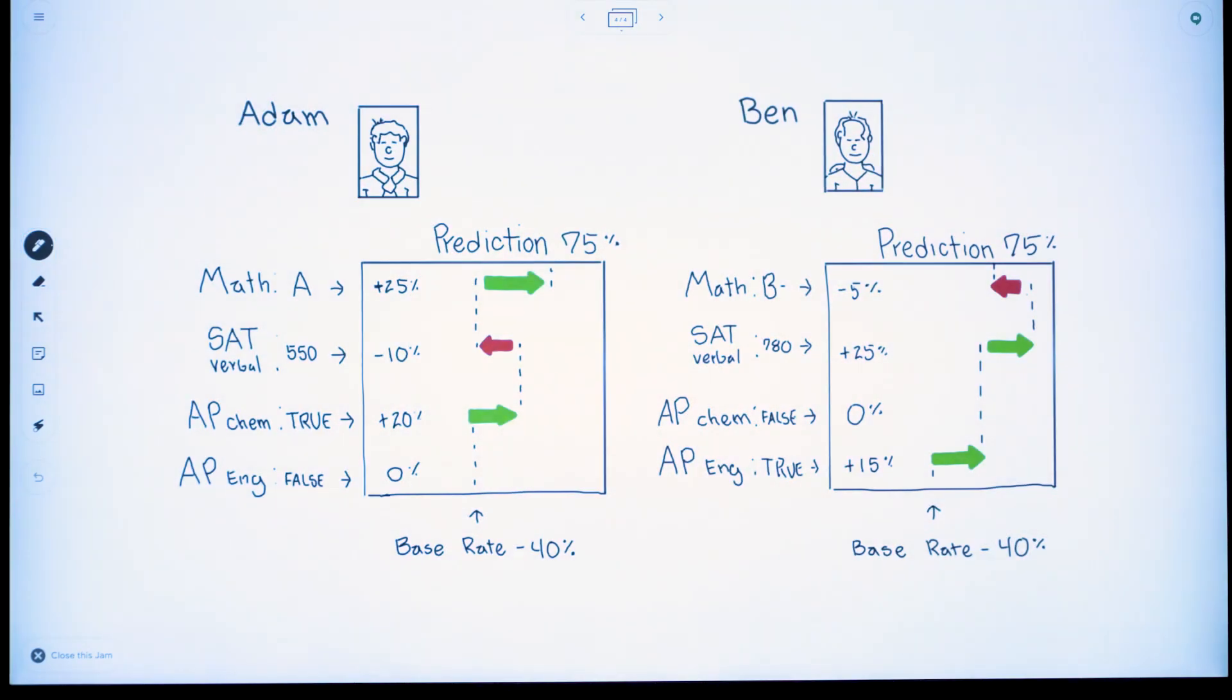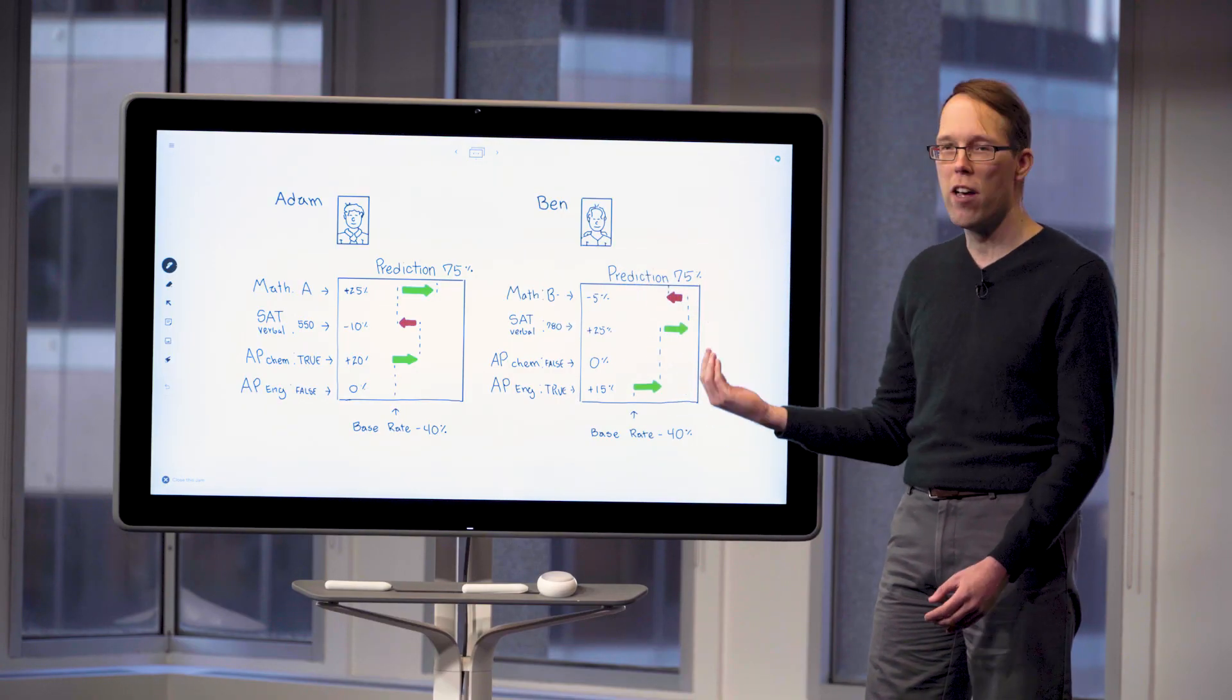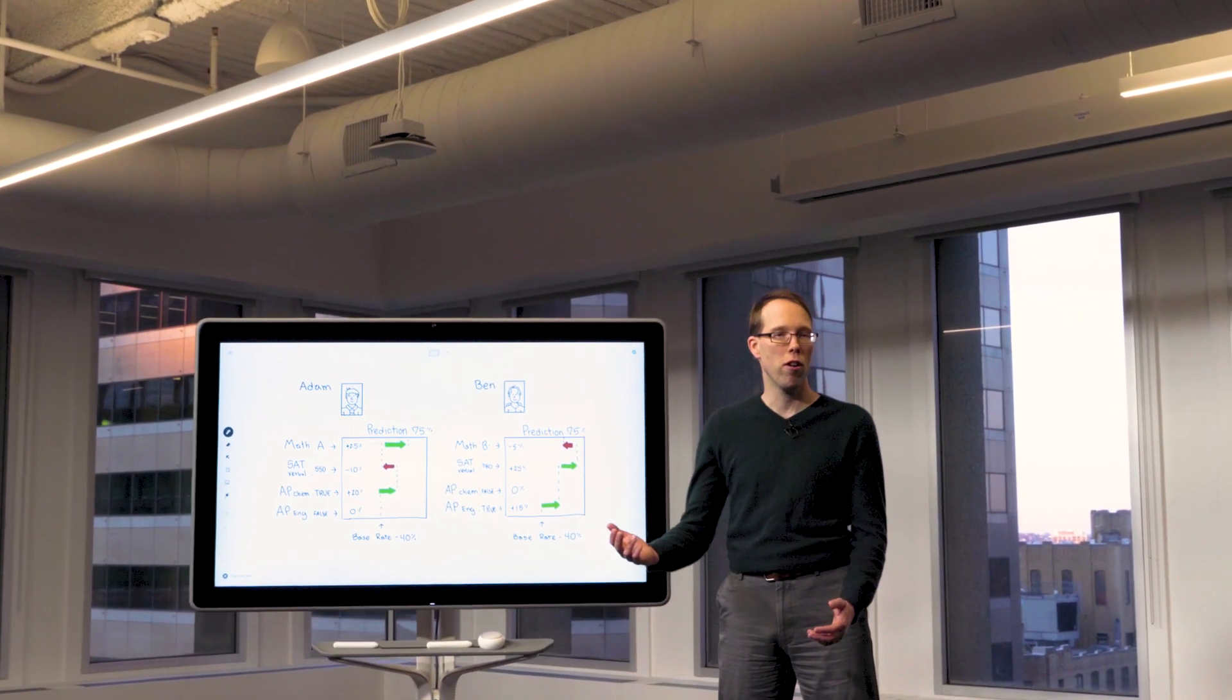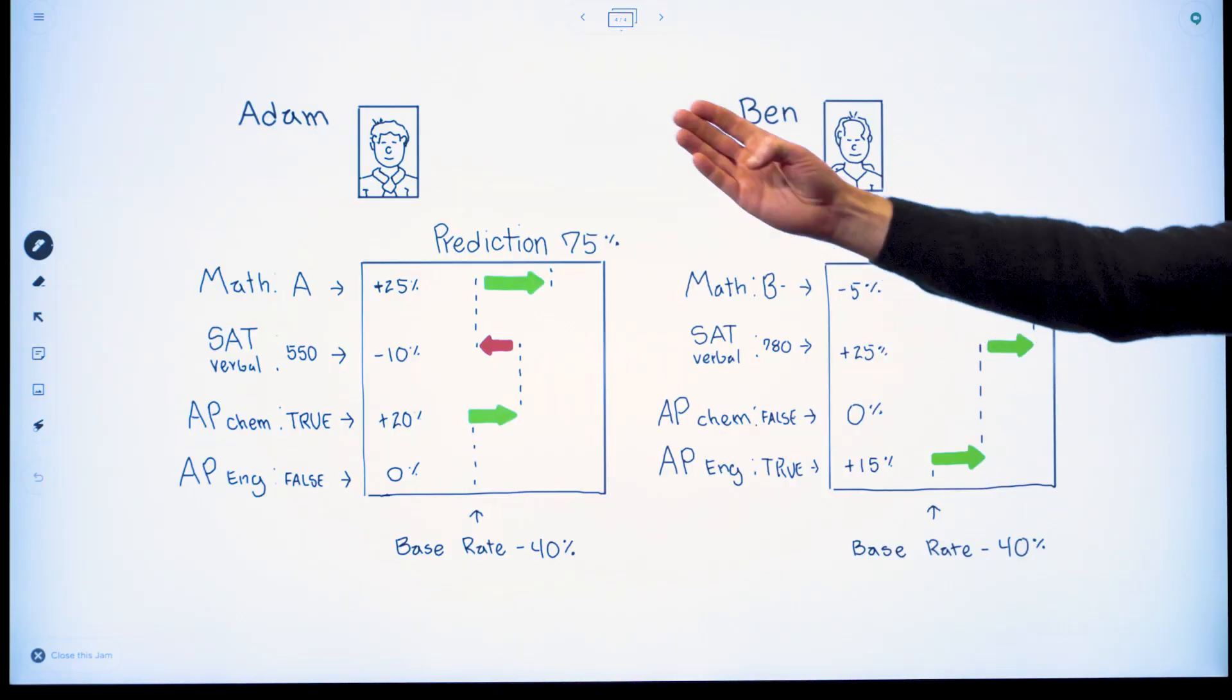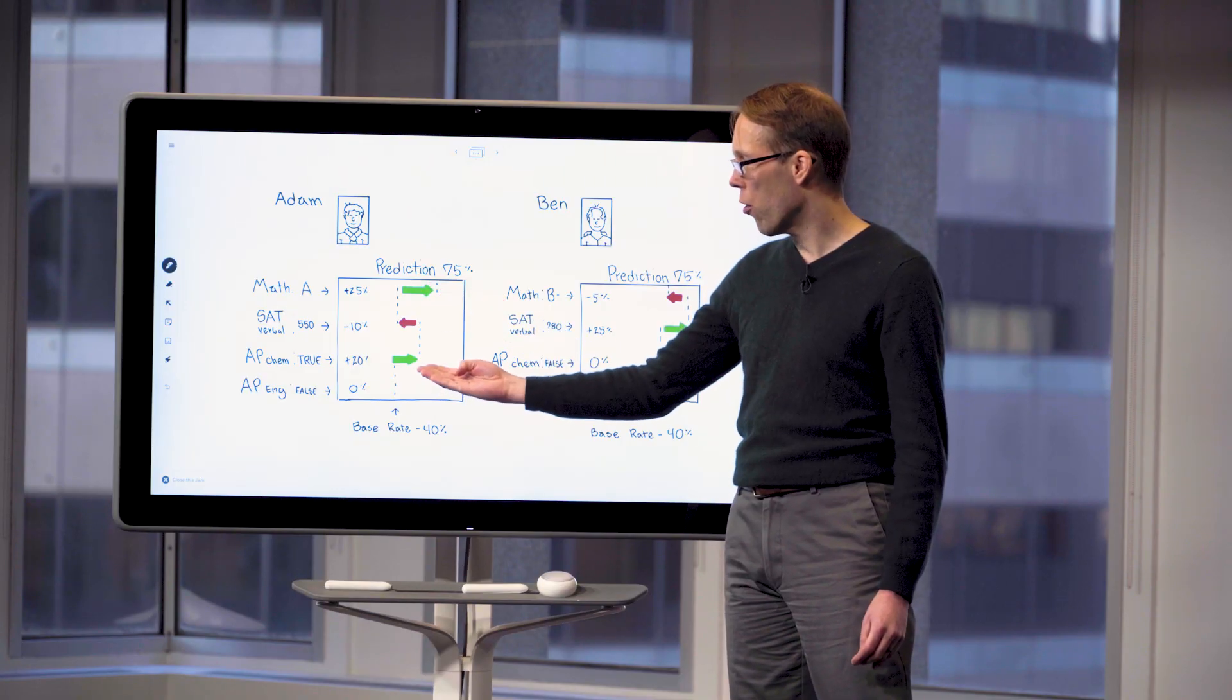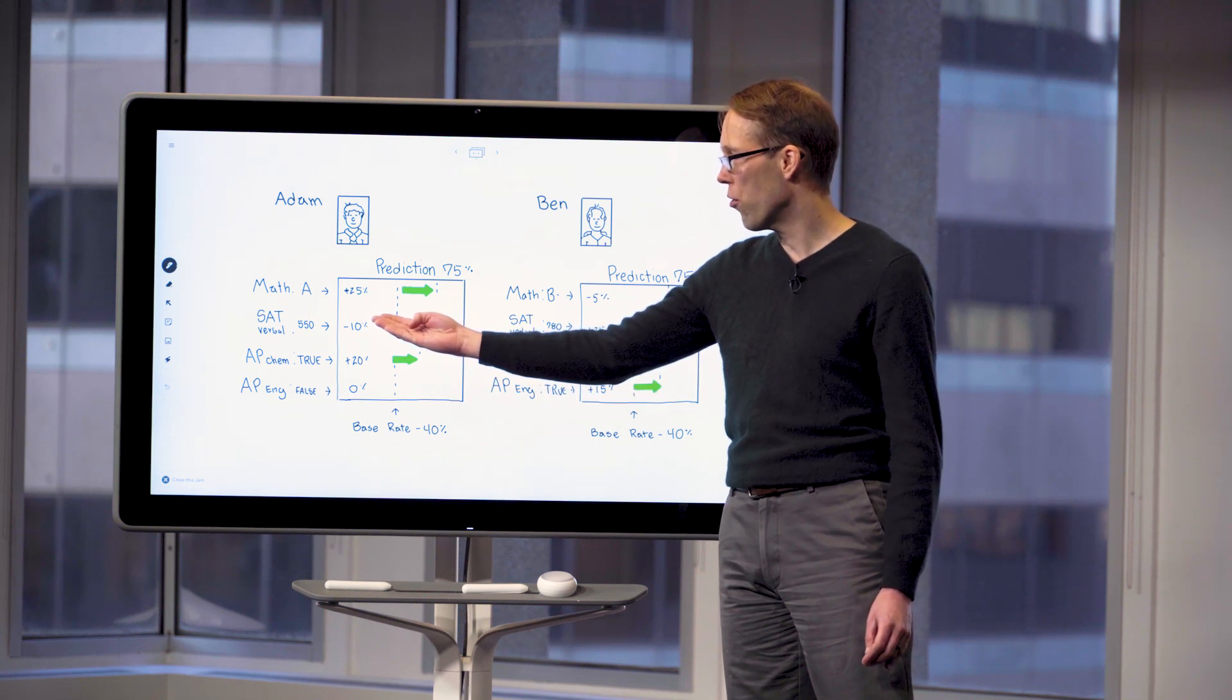Here are two students, Adam and Ben, who have the same predicted chance of graduating, 75%. They're in pretty good shape, but their advisor wants to know how they can increase their odds even more. By looking at the Shapley values for Adam, we see positive contribution from math and science courses and some negative influence from an SAT verbal score of 550.